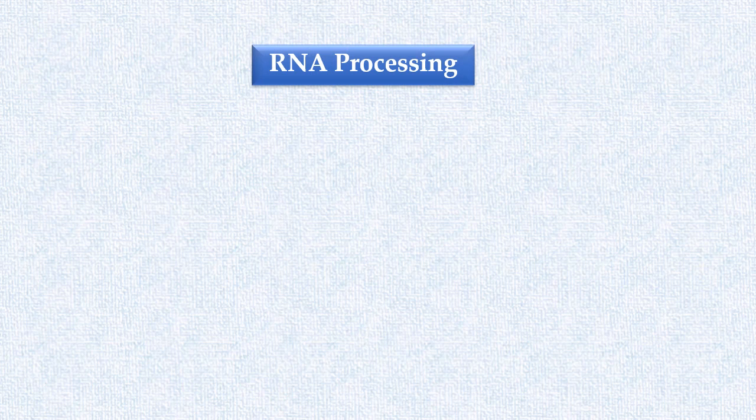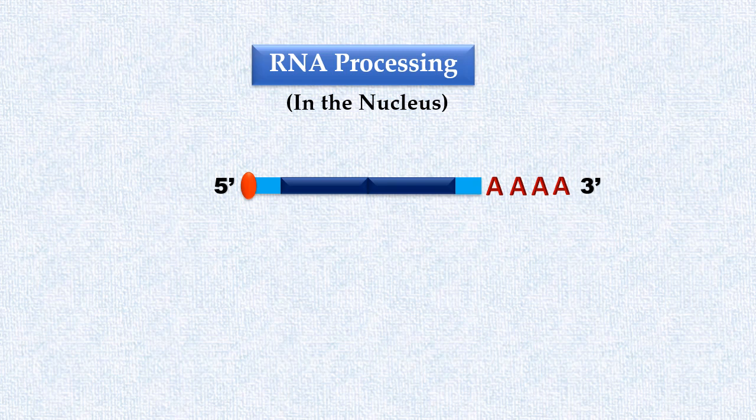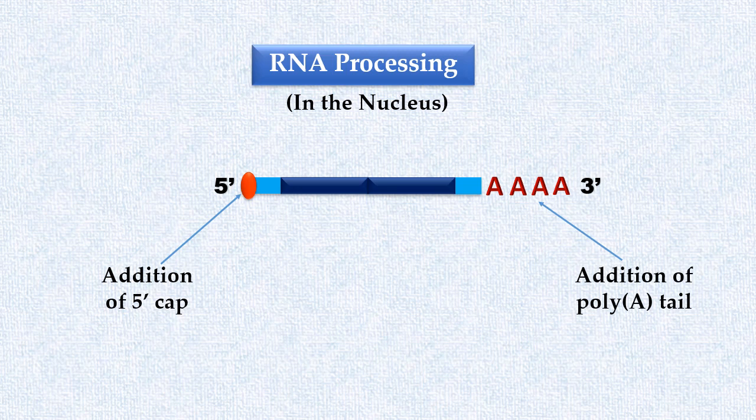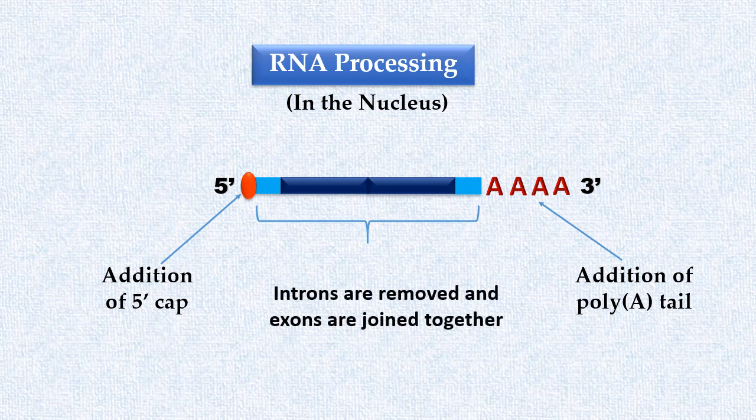RNA processing in the nucleus consists of several modifications of pre-mRNA. Both the ends of pre-mRNA are modified. 5' cap is added at the 5' end of pre-mRNA. And a poly-A tail is added to the 3' end of the RNA sequence. Introns are removed and exons are joined together. This process is known as RNA splicing.